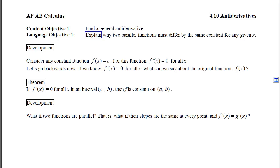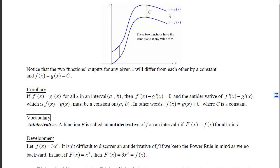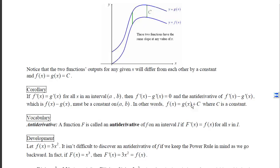Let's think about two parallel functions where f prime of x equals g prime of x. Looking at y equals g of x and y equals f of x, for any given x value the distance between the y coordinates is going to be the same. The two functions' outputs differ by a constant. So if the derivatives are the same, the difference of their derivatives is 0, meaning f minus g is a constant, so f equals g plus some constant.